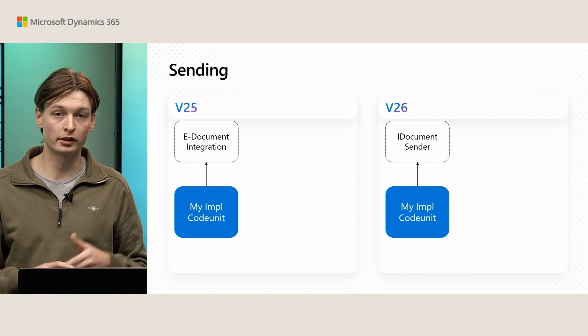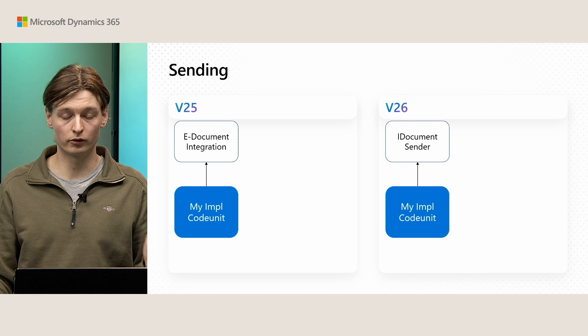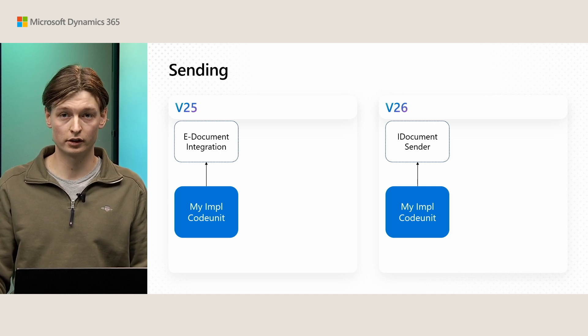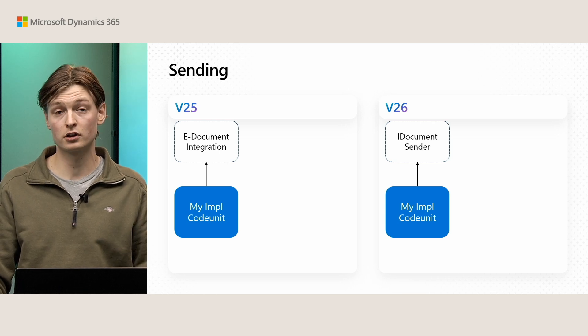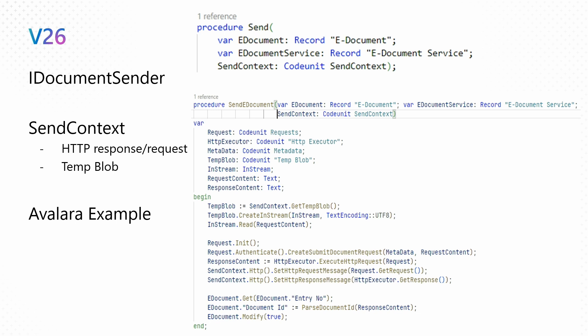Let's look in a bit more detail at the difference between version 25 and version 26. In version 25, the eDocument integration interface was what your code unit would implement. In the new version, for sending specifically, you implement the iDocumentSender. It has the same parameters as before, with the exception of the send context code unit, which is now provided as the third parameter — a wrapper for HTTP response and request information, as well as any data you want to send. In the Avalara example, we read the template from the send context provided by the framework, send it off to Avalara, get back the response, and store the document ID assigned.